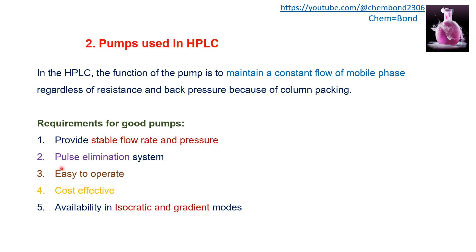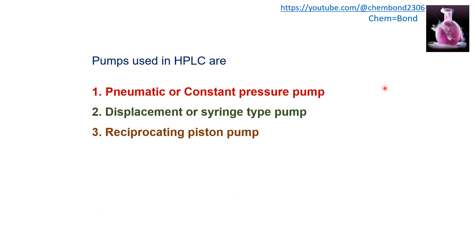Requirements for good pumps include: providing a stable flow rate and pressure pulse elimination system, easy to operate, cost effective, and available for isocratic and gradient modes of elution. Pumps used in HPLC are: pneumatic or constant pressure pump, displacement or syringe type pump, and reciprocating piston pump.